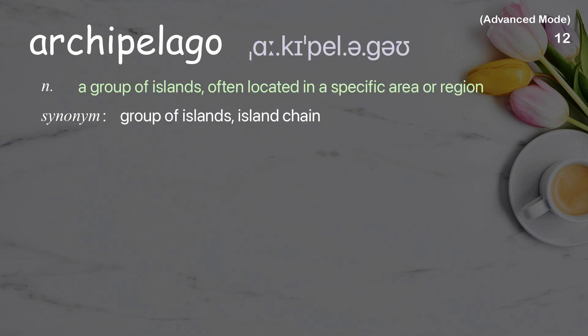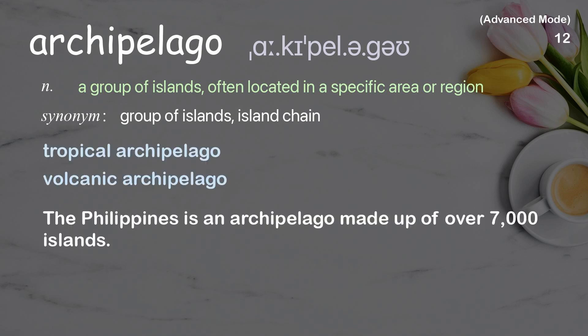Archipelago. A group of islands often located in a specific area or region. Examples: tropical archipelago, volcanic archipelago. The Philippines is an archipelago made up of over 7,000 islands.